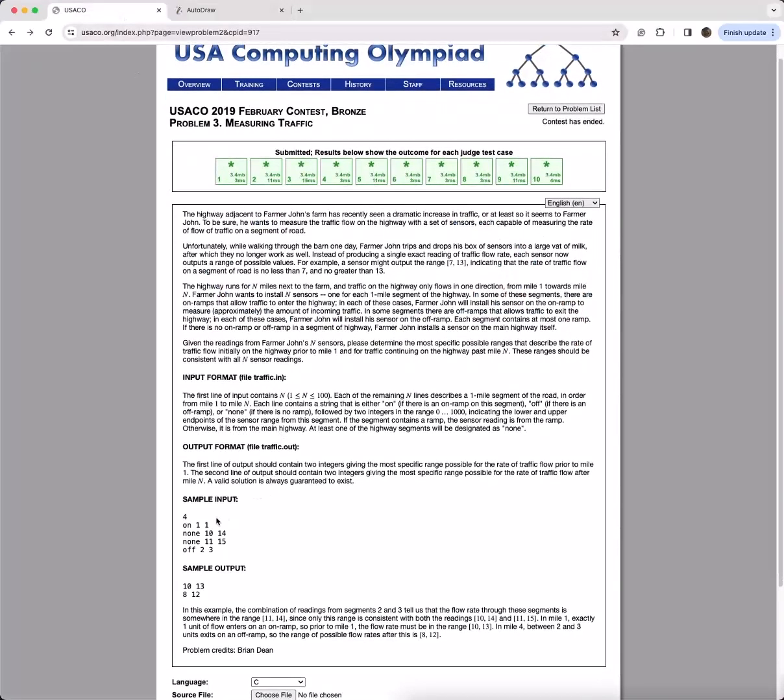Let's take a look at the input. We're given that N is four, which means there's going to be four miles and consequently four sensors. The next N lines describe each mile of the highway.